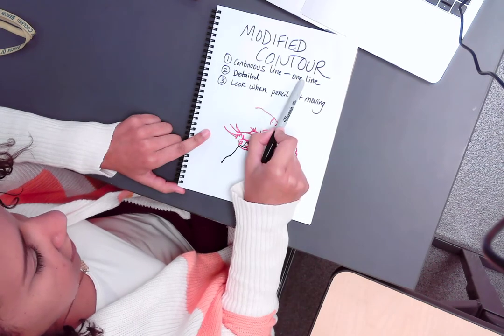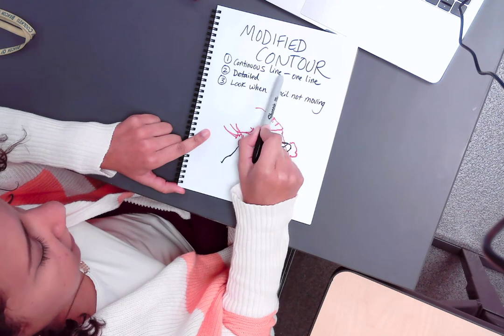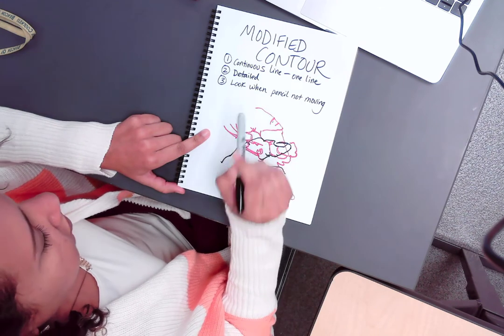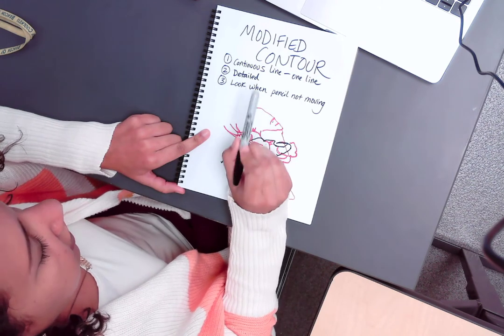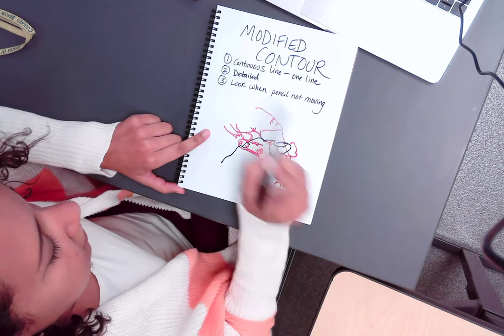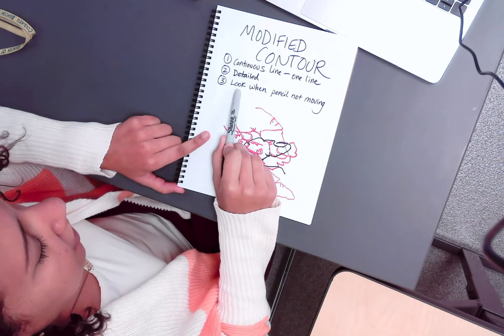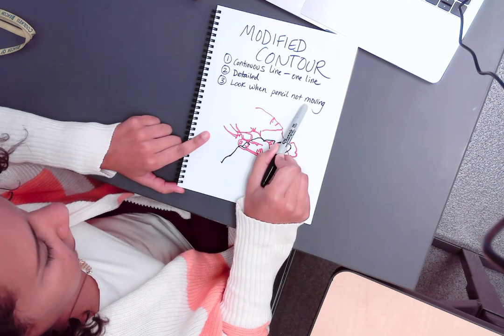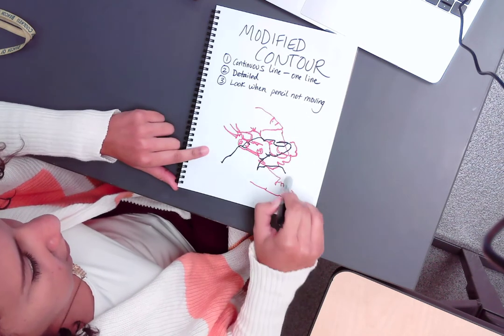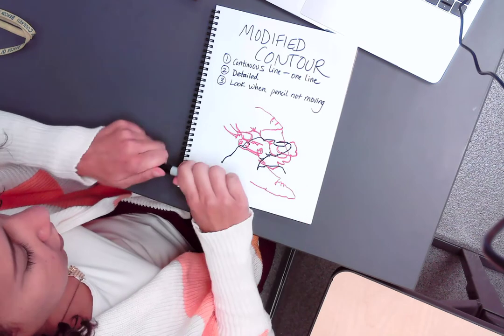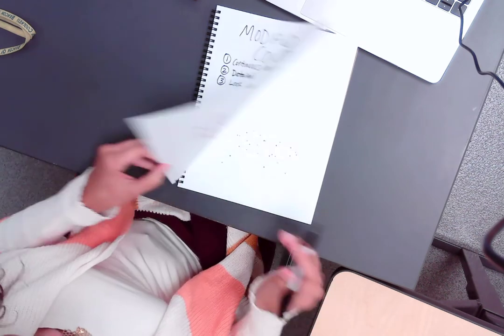One thing is going to stay the same, which is it's going to be a continuous line. It's still going to be a single line and you're never going to lift up your pencil. It will still be very detailed, so I'm still going to look for those bumps, creases, and things going through. But I'm going to look at my paper when my pencil is not moving. So it's still going to look a little bit crazy, but it's going to be more detailed.